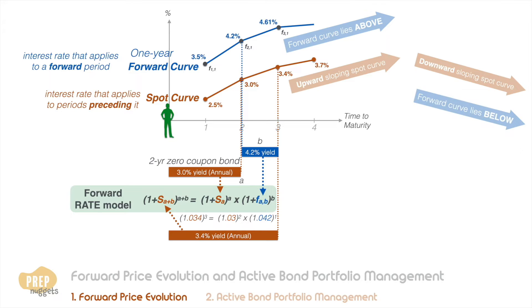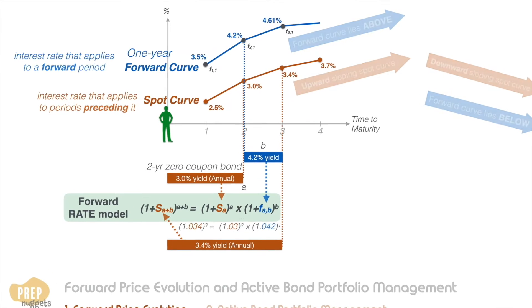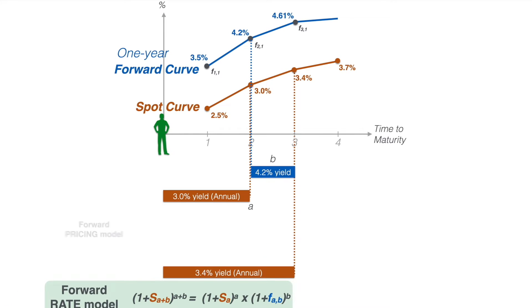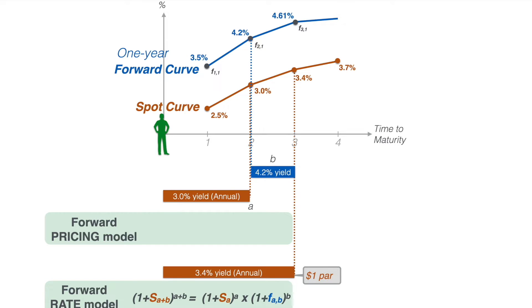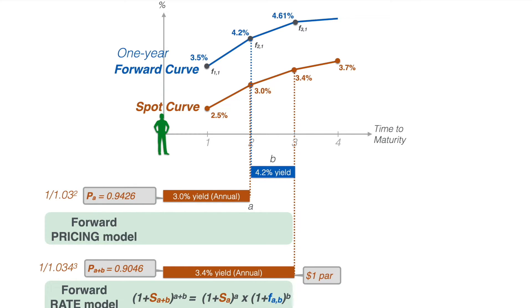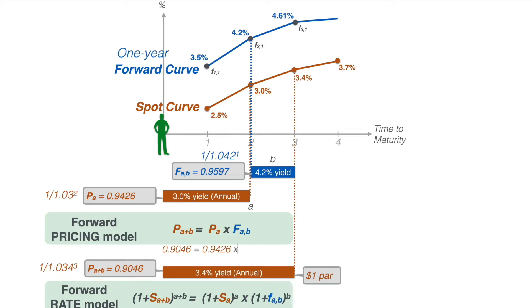Conversely, if the spot curve is inverted, the forward curve should go below it. A related model to the forward rate model is the forward pricing model. The price of a one-dollar par three-year zero coupon bond should be 0.9046 today, while the price of the two-year zero coupon bond should be 0.9426 today. The price of the forward, denoted with the letter F, must be 0.9597 to satisfy the no-arbitrage condition.